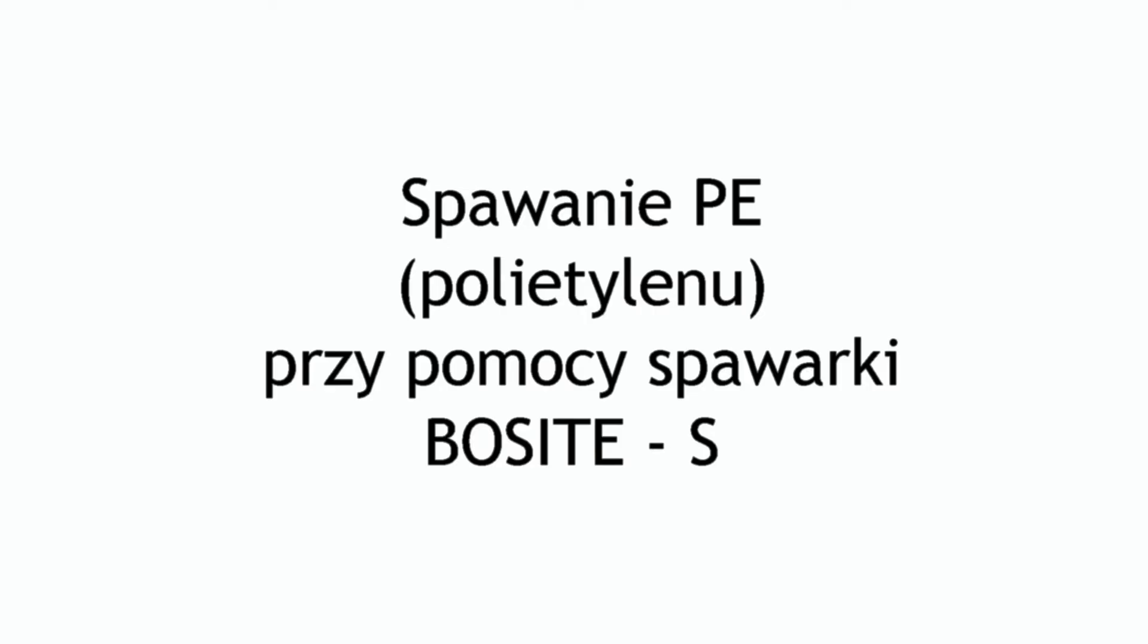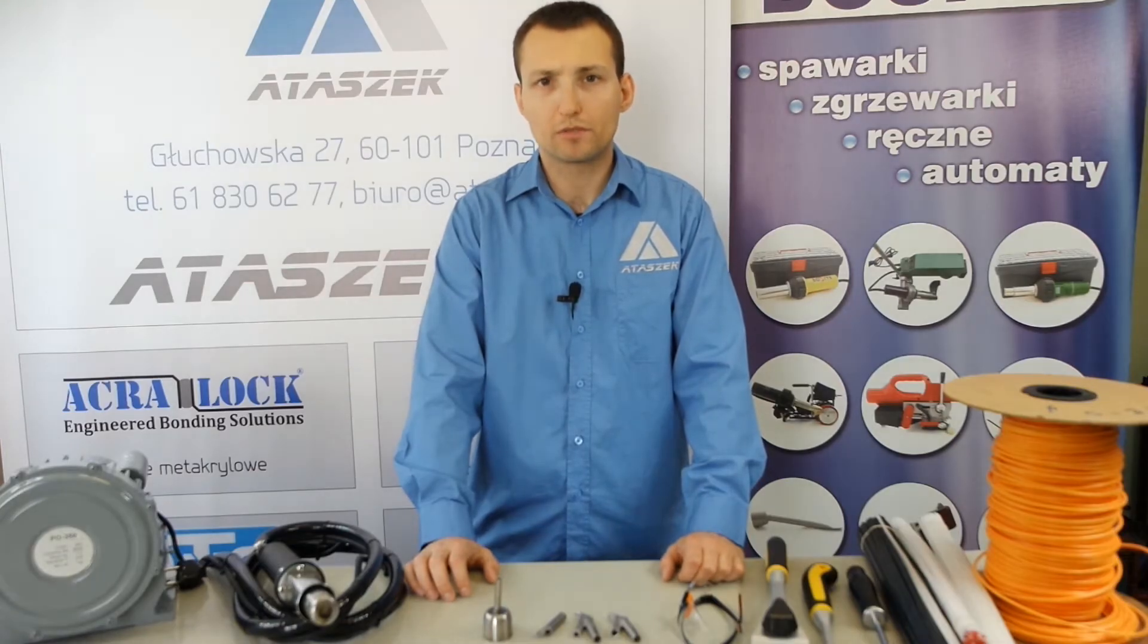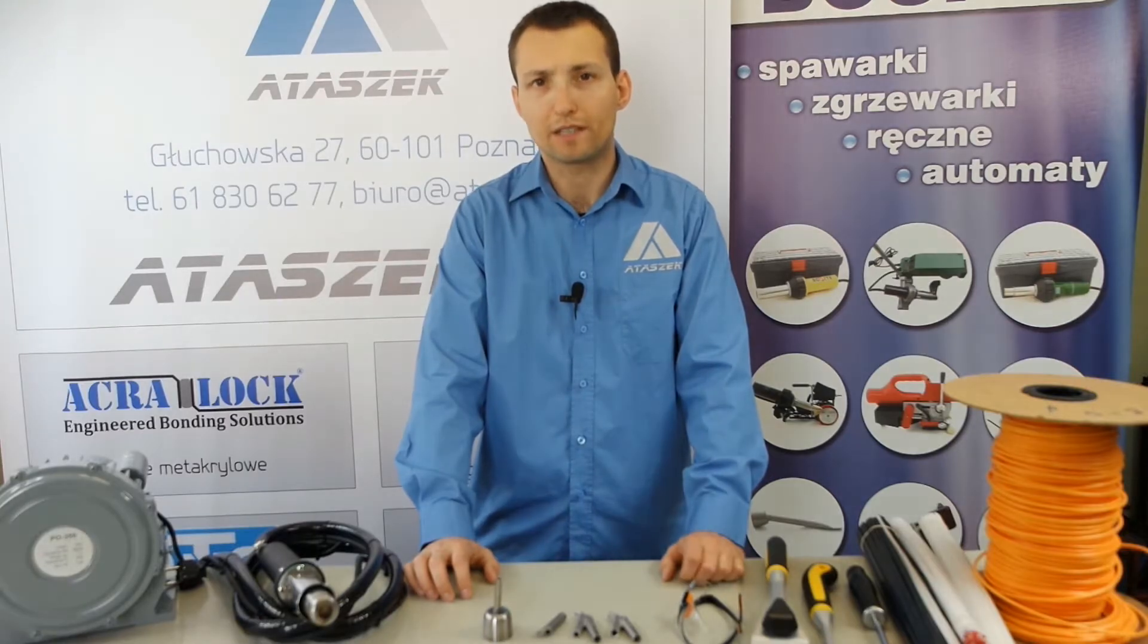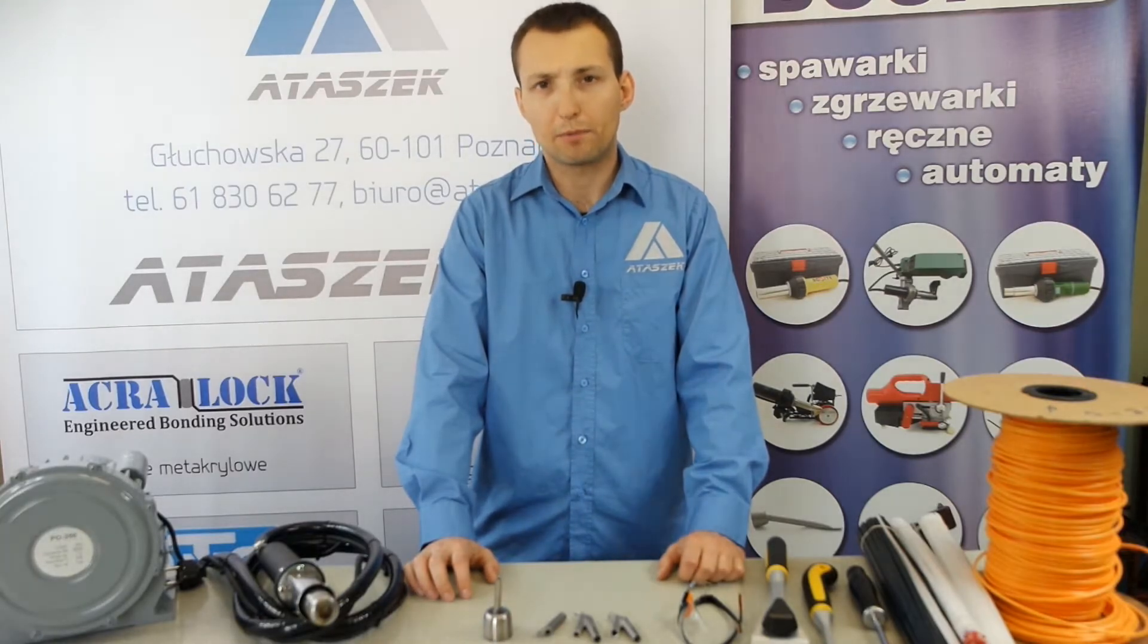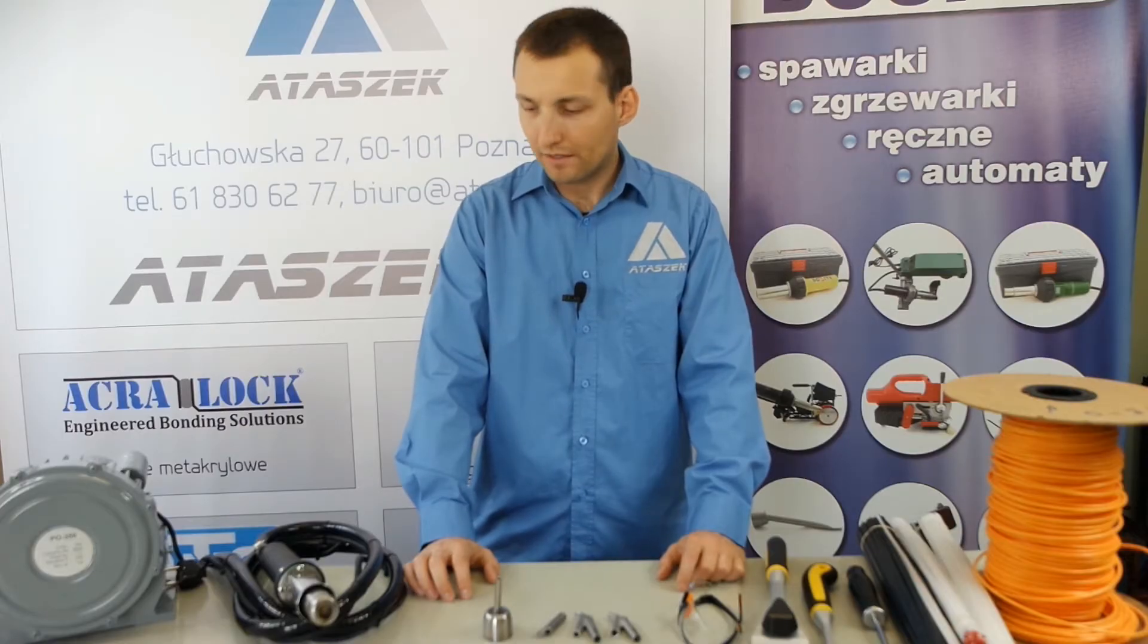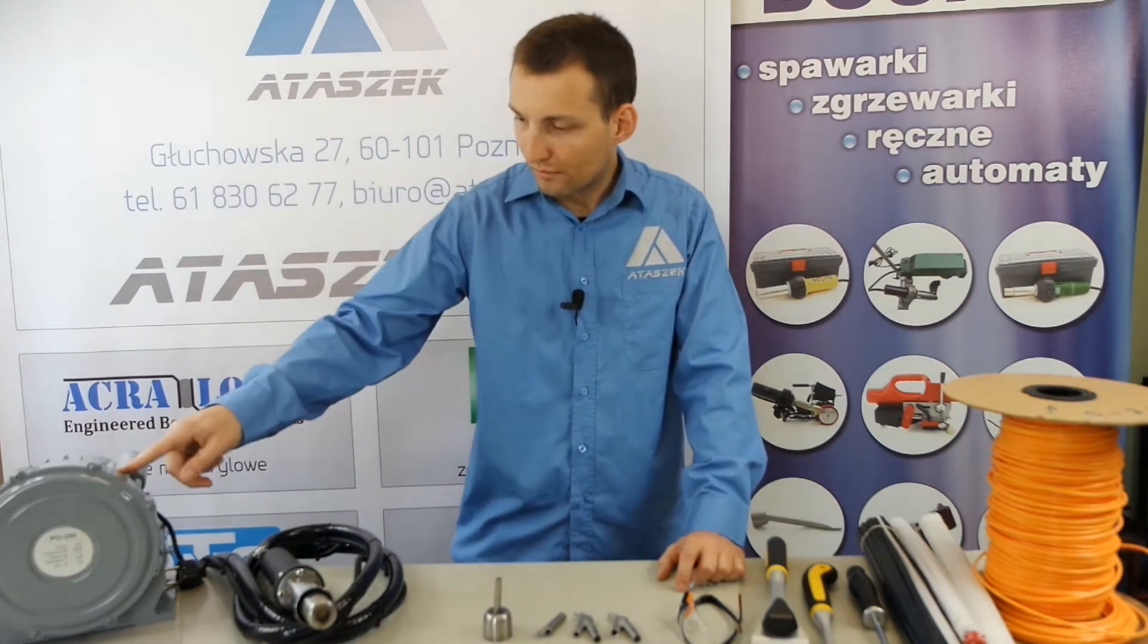Polyethylene welding with the help of Bosite S welder. Welcome, today you're going to see PE polyethylene welding. It is high density polyethylene, PE HD. The welded element is now plowed with a both side hot welder.